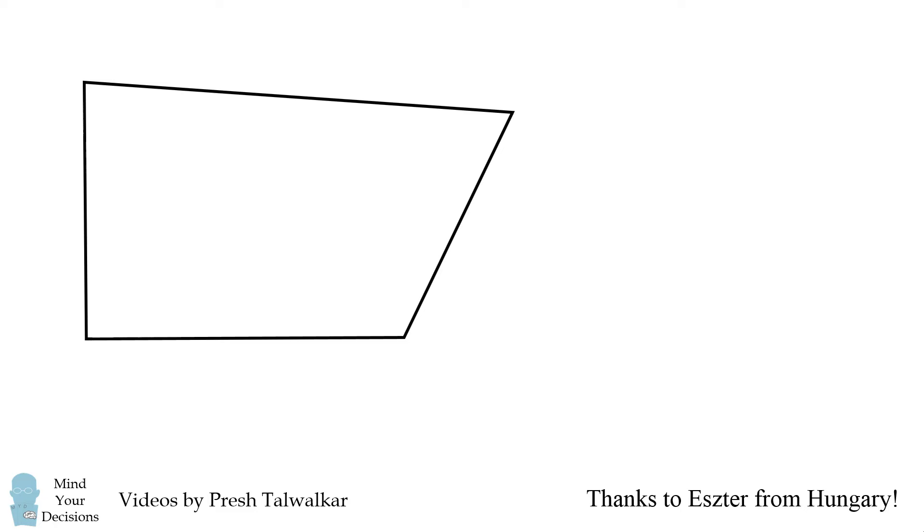Start out with the quadrilateral where two of its opposite sides have the same length of x. Label the vertices A, B, C, and D. As typical with math diagrams, this diagram is not to scale.